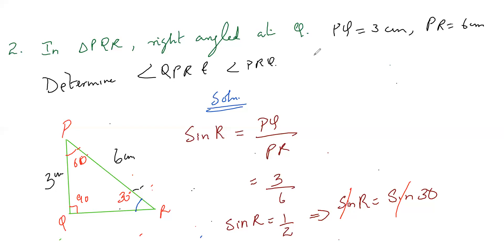So we got the angle QPR is equal to 60 degree, and angle PRQ is equal to 30 degree. That's it. It's a very easy question.